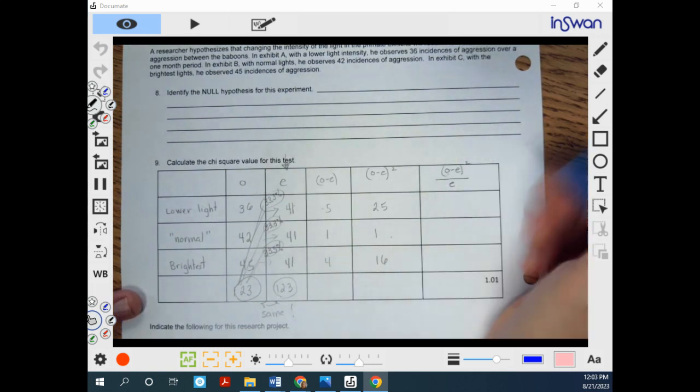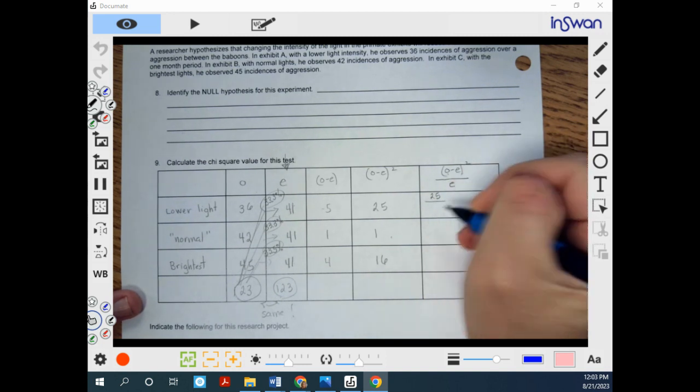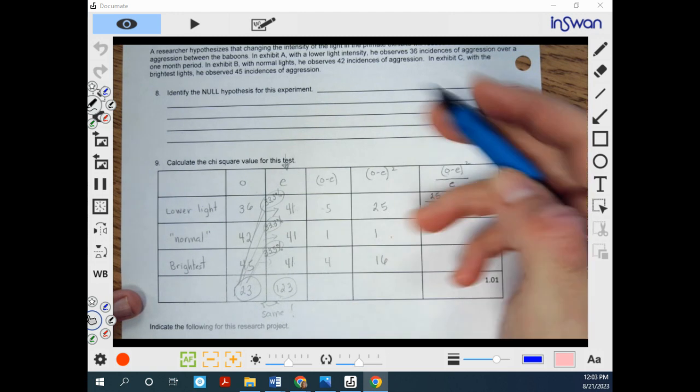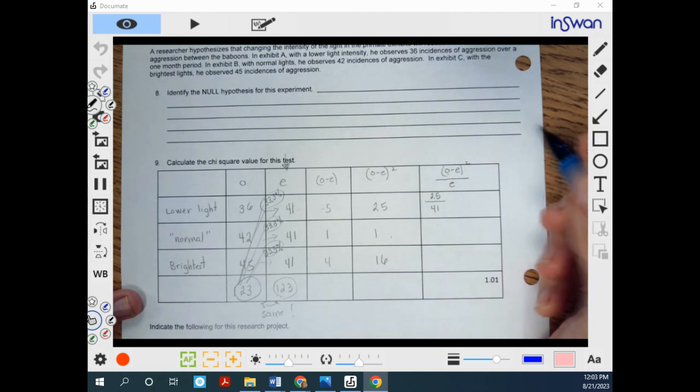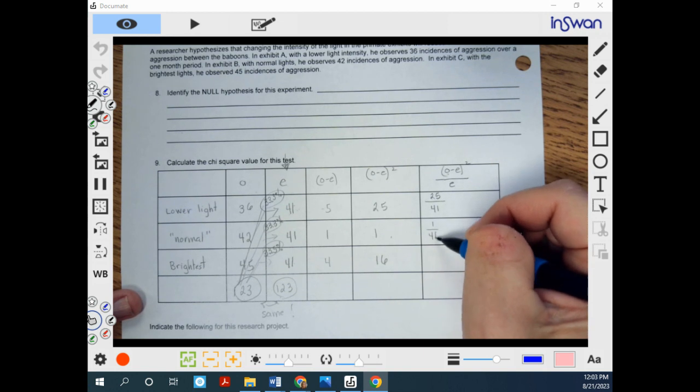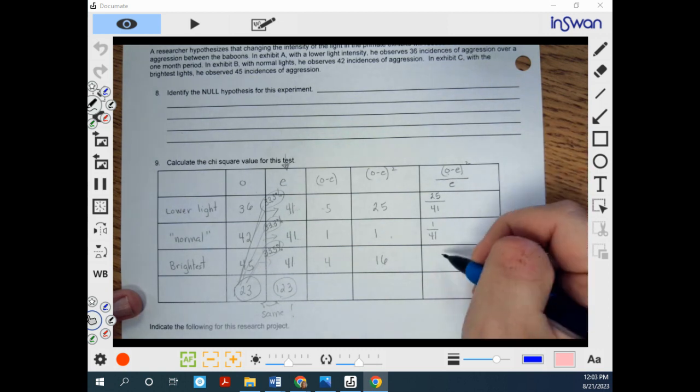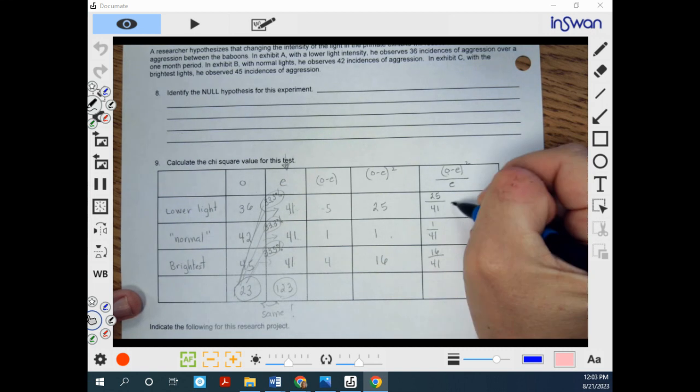This is the top number right here. So when we put 25 at the top, we have to divide it by the expected. In this case, it's 41 should be in exhibit A. Then we're going to take this number, 1 divided by 41, which should be in B if it's not affecting the aggression. And then we're going to do 16 divided by 41.